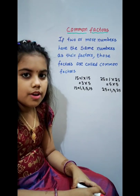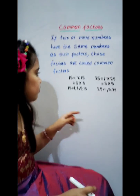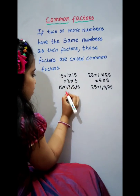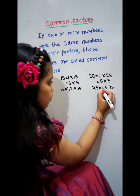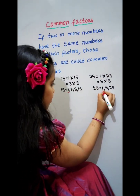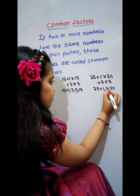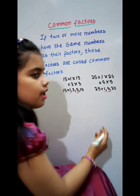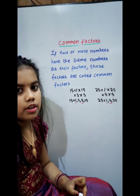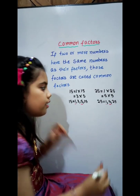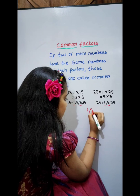Now we will find the Common Factors. Comparing: 1 and 1, 5 and 5. The Common Factors of 15 and 25 are 1 and 5.